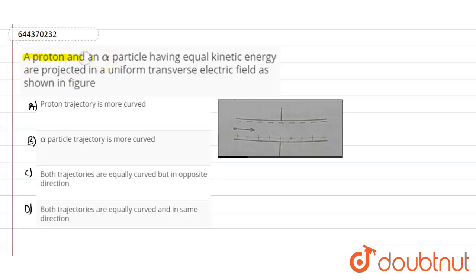question, it is given that a proton and an alpha particle having equal kinetic energy are projected in a uniform transverse electric field as shown in this figure. If you look into this figure, we have a